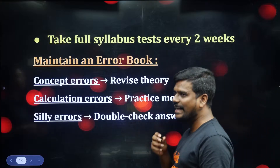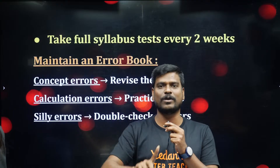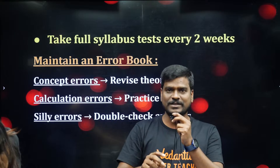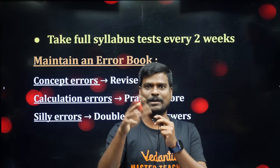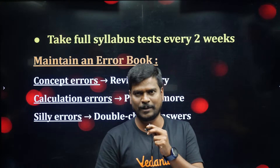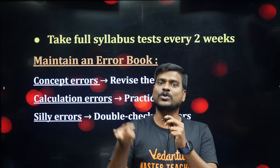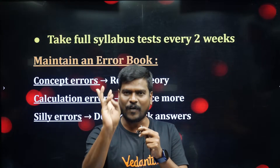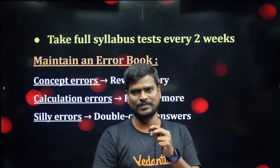That is why the error book — every student must maintain this, it is compulsory. Suppose you apply a formula directly but get the wrong answer. Sometimes you work out a numerical problem and the answer is wrong. Ask yourself: what is the mistake? Did you misunderstand the question? Did you understand the concept incorrectly? Did you choose the wrong option? If you analyze the first reason for your mistake, you will find a correct approach.